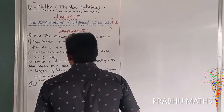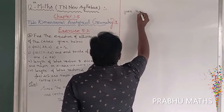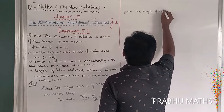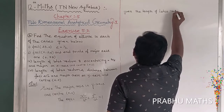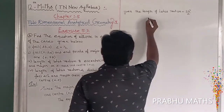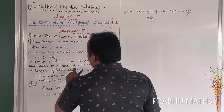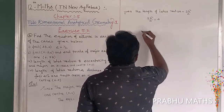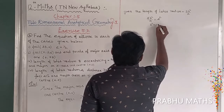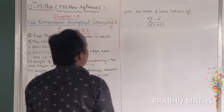Given: the length of the latus rectum is equal to 4. The formula is 2b²/a = 4, so this gives us b² = 2a.